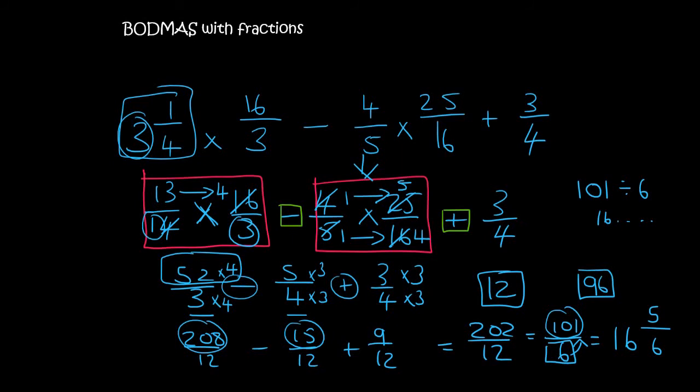Let me explain that last part again. We originally had 202 over 12. We then said that we should just type that in on the calculator so that the calculator can simplify it to 101 over 6. Now we need to write this as a mixed number. Now it's difficult to know how many times 6 fits into 101. It could take you really long.